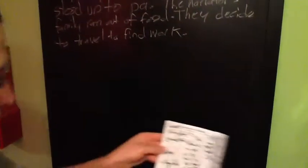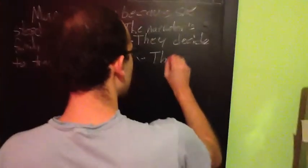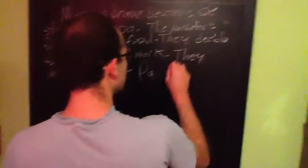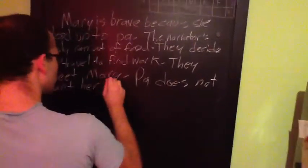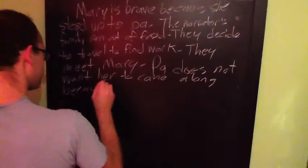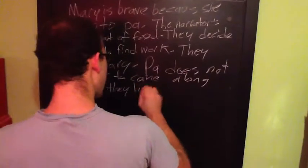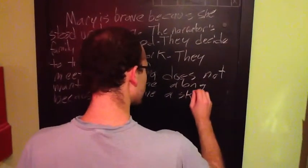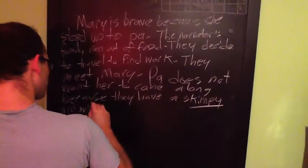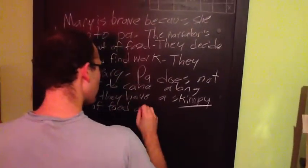They meet Mary. And then the last piece of my context is: they don't want her to come along because they're out of food and money. So I'll write: Pa does not want her to come along because they have a skimpy amount of food and money.